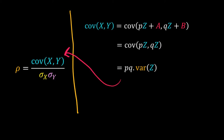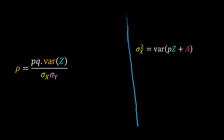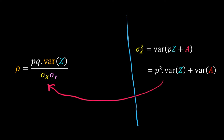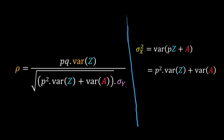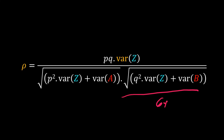Substituting into the formula for rho, we now compute the standard deviations in the denominator. The variance of x equals p²·variance(z) + variance(a), since z and a are independent. The standard deviation of x is the square root of this. The standard deviation of y has a similar form. This expanded form of rho will be useful for exploring its properties.